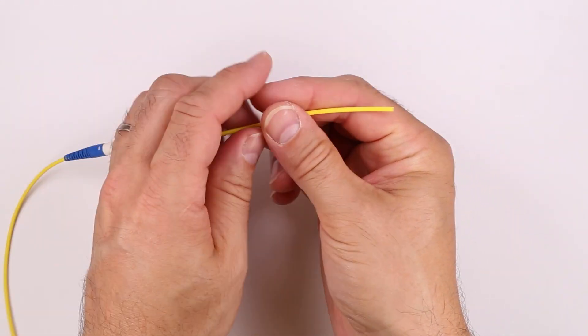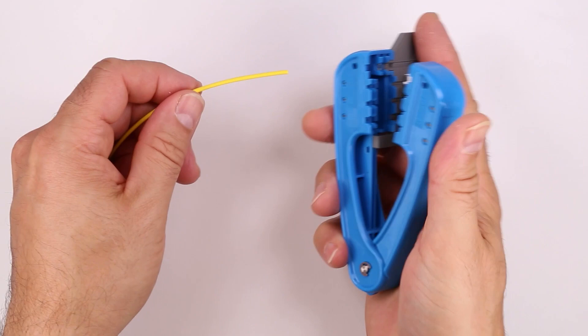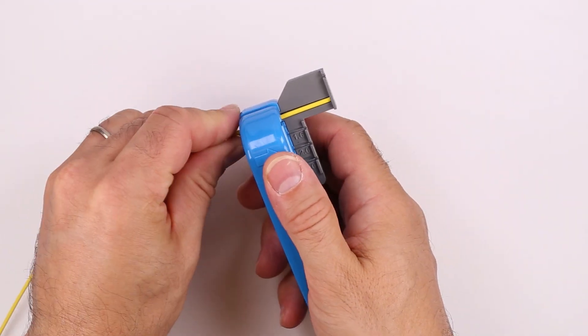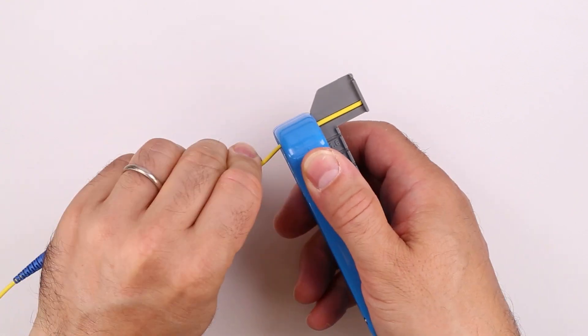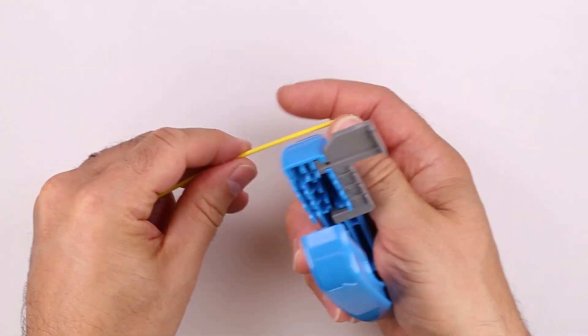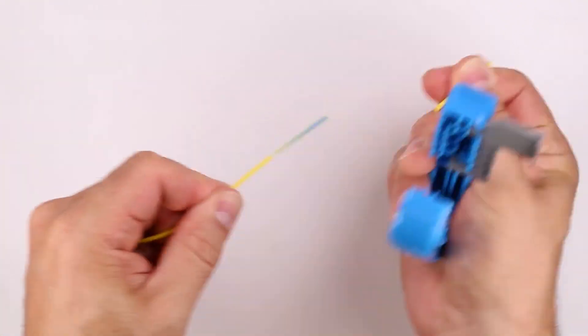Insert the cable in the cable stripping groove of the cord tool with the end of the cable touching the stop. Close the tool and rotate the cable to cut the jacket. Remove the jacket.